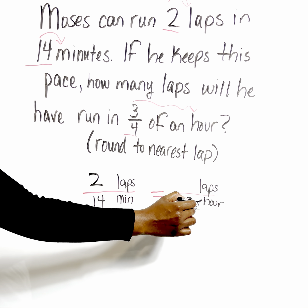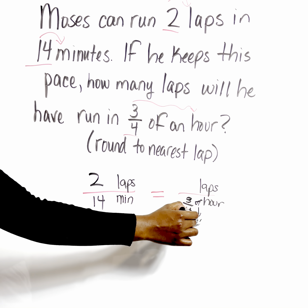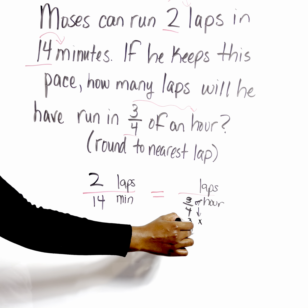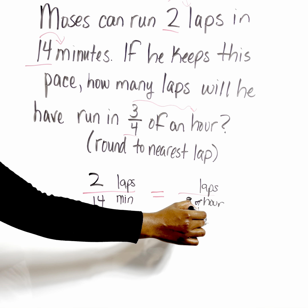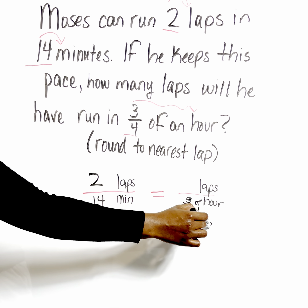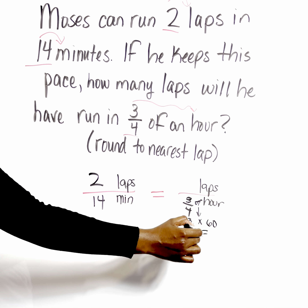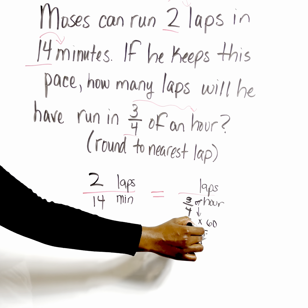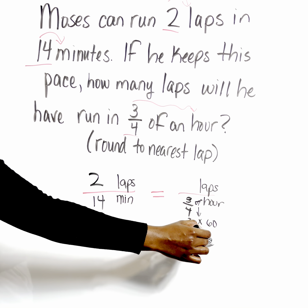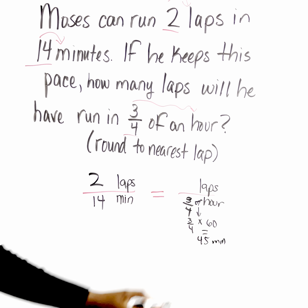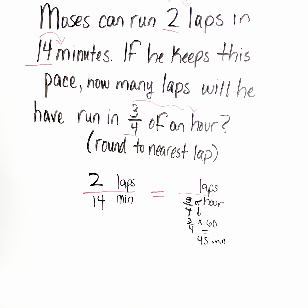So how do you figure that out? Anytime we see the word 'of,' that means we have to multiply. So if we say three-fourths times 60 minutes, that's going to give us 45 minutes.